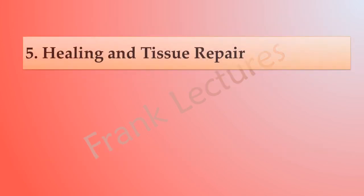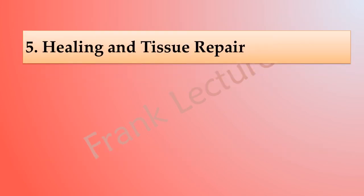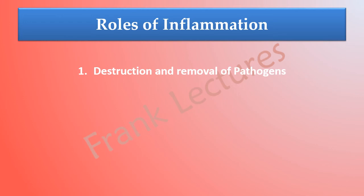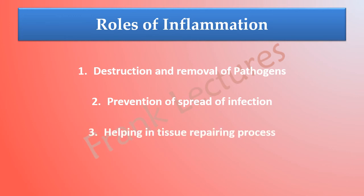Finally, once the inflammation reaction has subsided, healing and tissue repair accelerates. The major roles of inflammation are: first, destruction and removal of harmful agents and microbes from the body, made possible by delivery of phagocytes and antimicrobial substances from blood to the damaged site; second, prevention of spread of infection to other tissues through local blood clotting which isolates the damaged area; and third, helping in the tissue repair process.